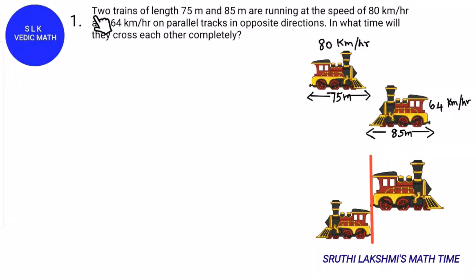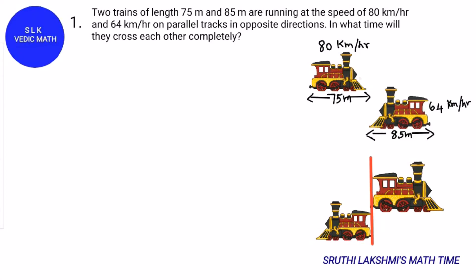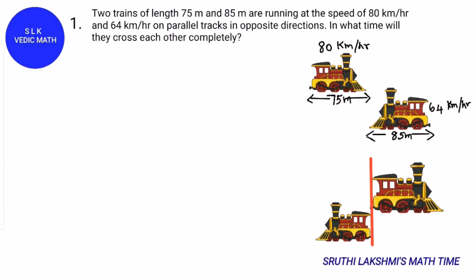Problem number one: Two trains of length 75m and 85m are running at speeds of 80 km/h and 64 km/h on parallel tracks in opposite directions. In what time will they cross each other completely? The first train is running at 80 km/h with a length of 75m, and the second train is running at 64 km/h with a length of 85m.